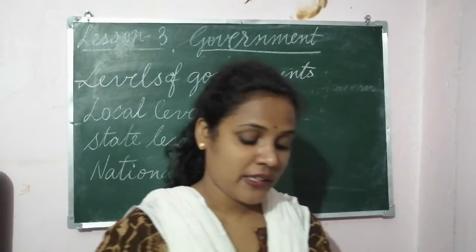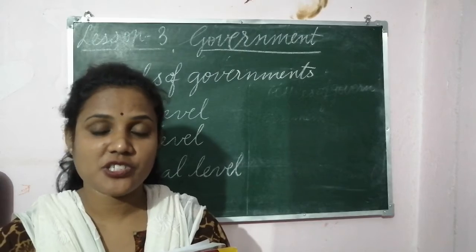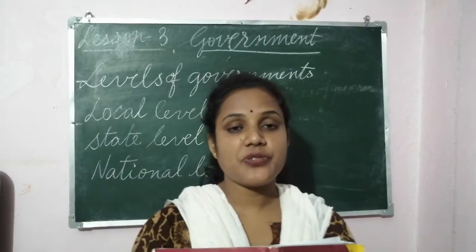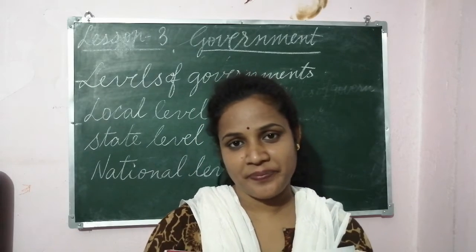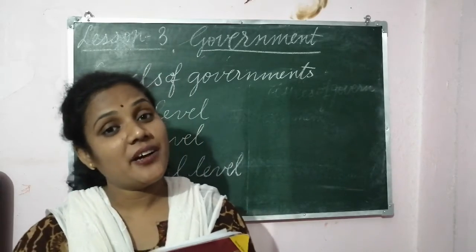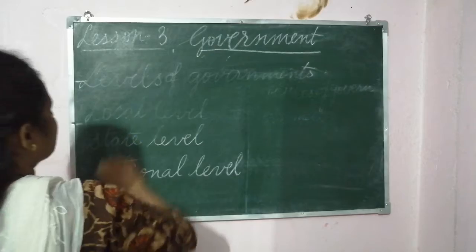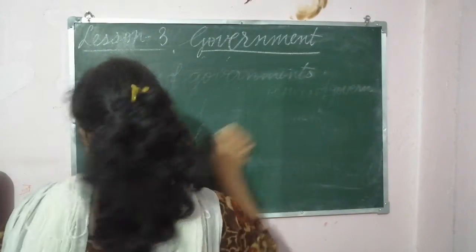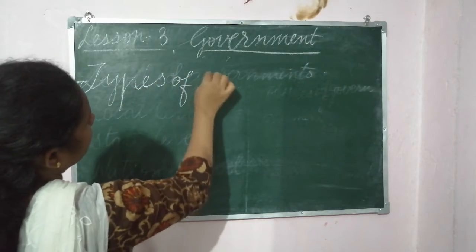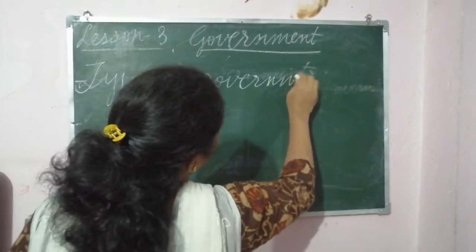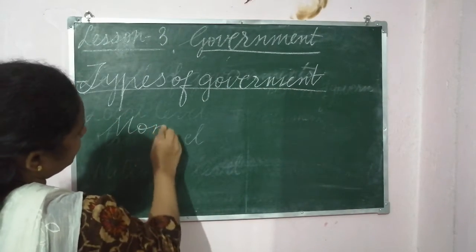Next we have types of government. You must have heard there are different types: dictatorship, hereditary which is called monarchical, and democratic. Which type do we have in our country? We have democratic. So types of government — the first one we can take is monarchy.